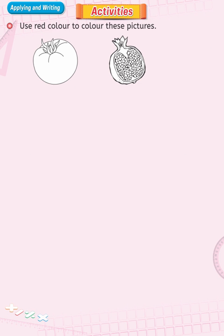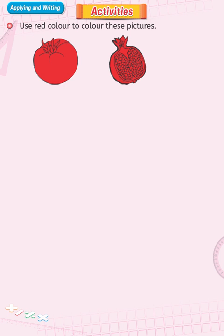Use red color to color these pictures. Take red color pencil to color the tomato and the pomegranate. Be careful to color these objects within the designated space. That's right.